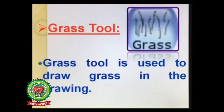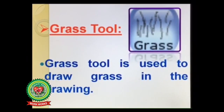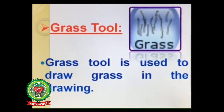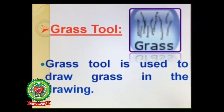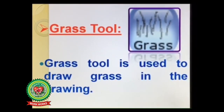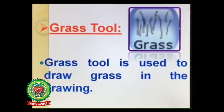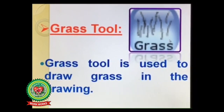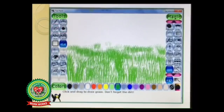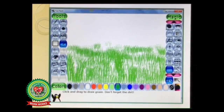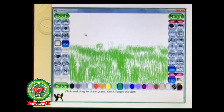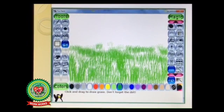Next key term is grass tool. Grass tool is used to draw grass in the drawing. The identification of grass tool you can see here. To give grass effect in your drawing, you can use grass tool option, which is present under the magic tool.